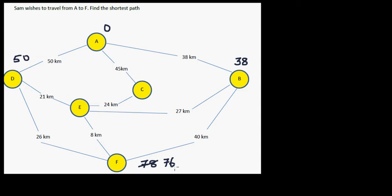Can we better 76 in any other way? Let's go from A to C. The distance from A to C is 45, and the distance from C to E is 45 plus 24, which is 69. And 69 plus 8 is 77. So that's not a better path. So we don't cancel this because 76 is less than 77.